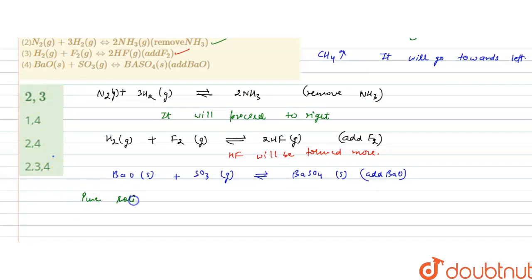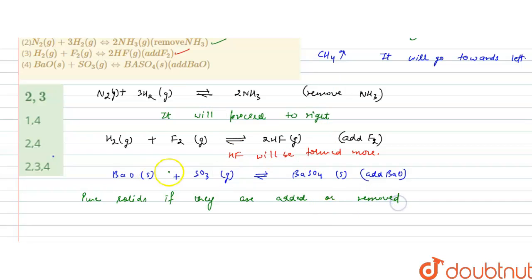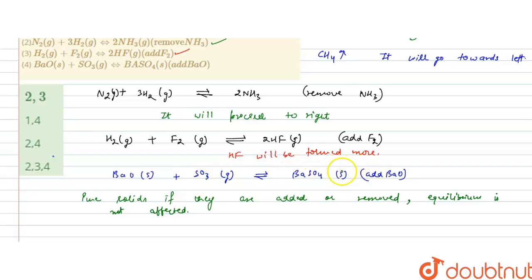Barium oxide is a solid. Pure solids, if they are added or removed from a reaction which is in equilibrium, the equilibrium is not affected by them. So equilibrium is not affected.